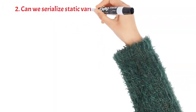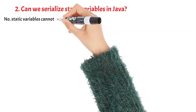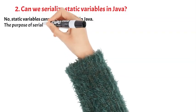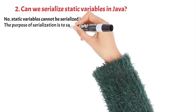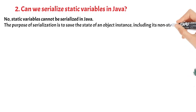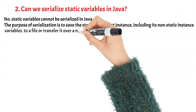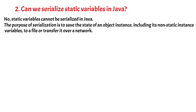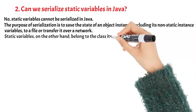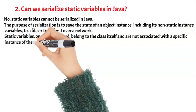Question 2: Can we serialize static variables in Java? No, static variables cannot be serialized in Java. The purpose of serialization is to save the state of an object instance, including its non-static instance variables, to a file or transfer it over a network. Static variables, on the other hand, belong to the class itself and are not associated with a specific instance of the class.